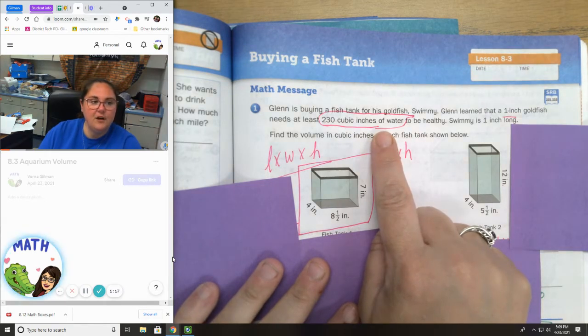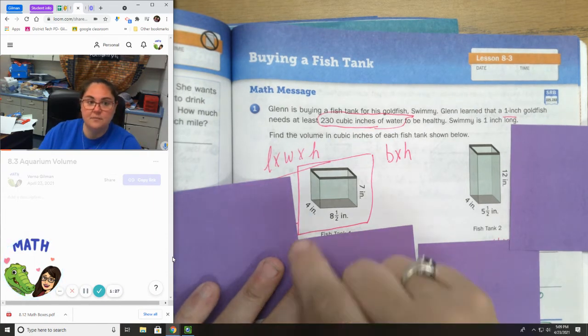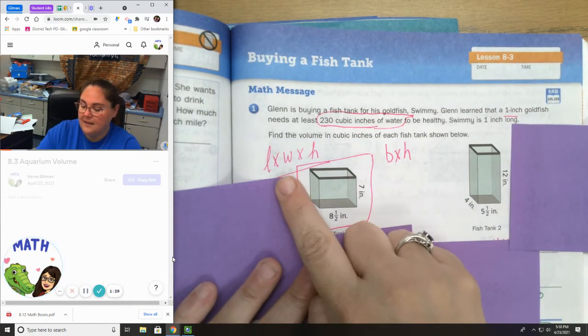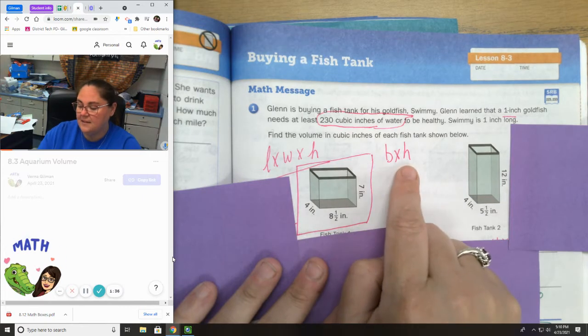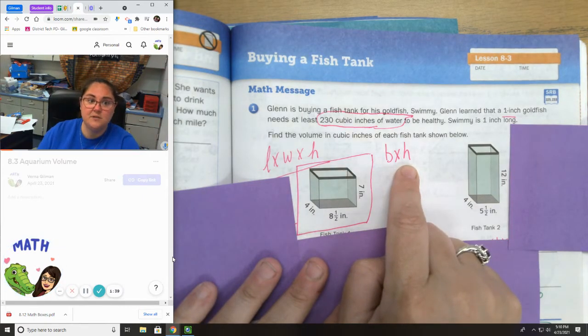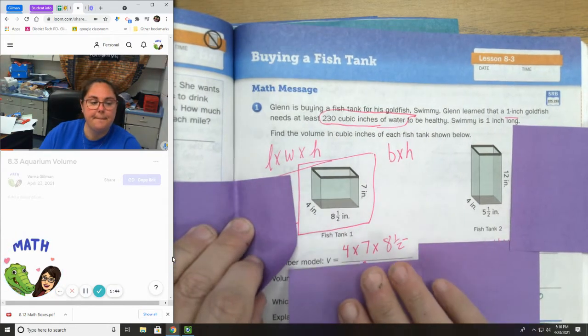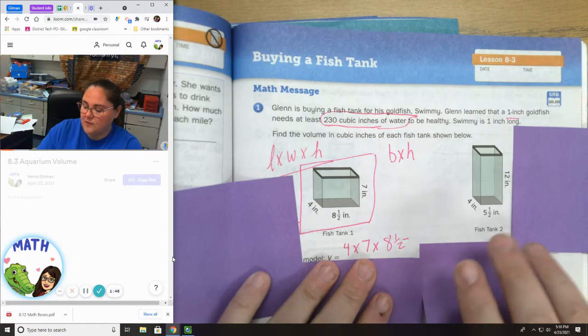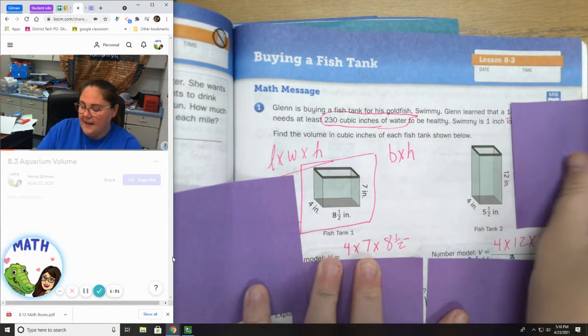Find the volume in cubic inches of each fish tank shown below. We know when we find volume, we do length times width times height or base times height. Now, neither of these give us the base. So we're going to use the volume using the traditional length method. My number model here will be 4 times 7 times 8 and a half.